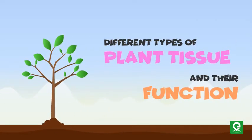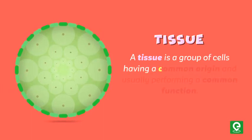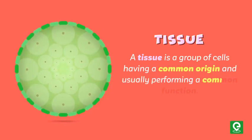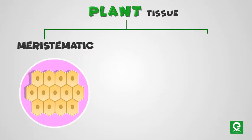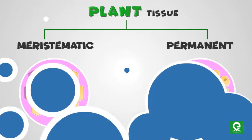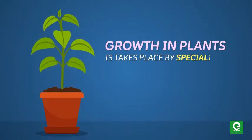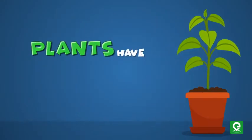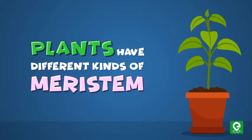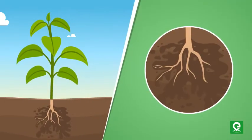A tissue is a group of cells having a common origin and usually performing a common function. Plant tissues are classified into two main groups: meristematic and permanent. Growth in plants takes place by specialized regions of active cell division called meristems. Plants have different kinds of meristems.